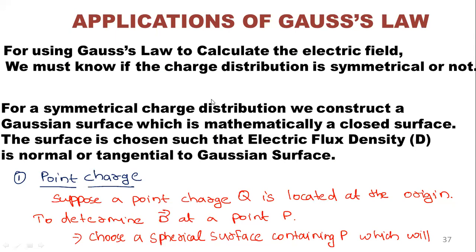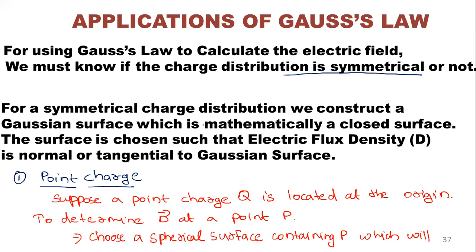Now we move to the applications of Gauss's law. To use Gauss's law to calculate the electric field, the charge distribution must be symmetrical — Gauss's law can only be applied when charge distribution is symmetrical. For a symmetrical charge distribution, we construct a Gaussian surface, which is a mathematically closed surface. The surface is chosen such that the electric flux density D is normal or tangential to the Gaussian surface, to avoid the dot product becoming zero.